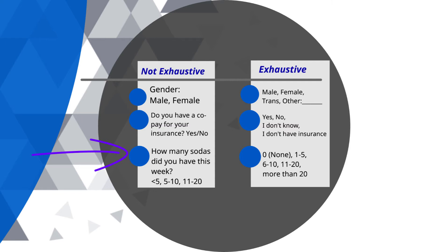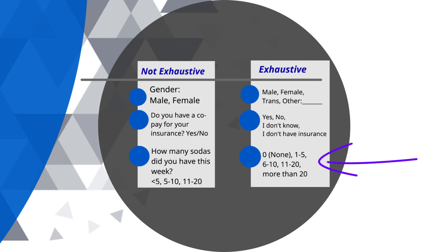The third example looks at how many sodas you had this week — collecting a frequency. People may not remember exactly, but could estimate they generally have one a day. But what if a respondent has five sodas in a single day? In a week that's more than twenty. Make sure your mutually exclusive categories on frequencies are also exhaustive. On the right, the fixed categories are: zero or none; one to five; six to ten; eleven to twenty; and more than twenty.